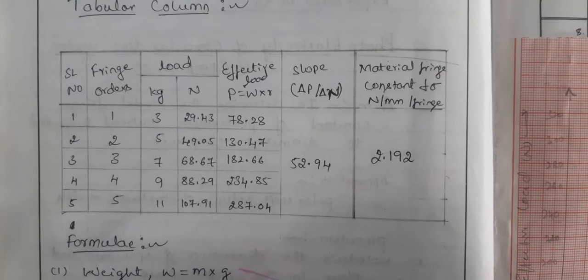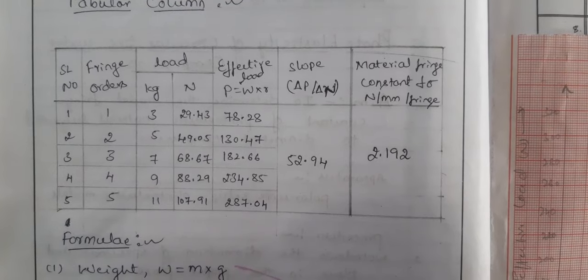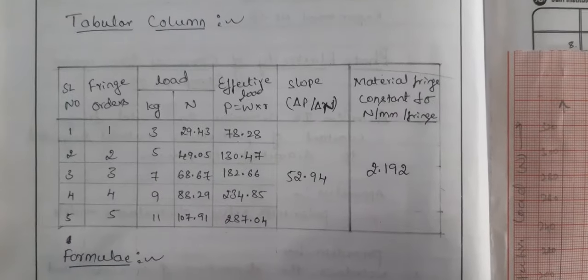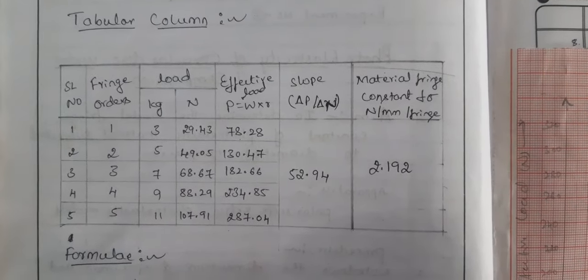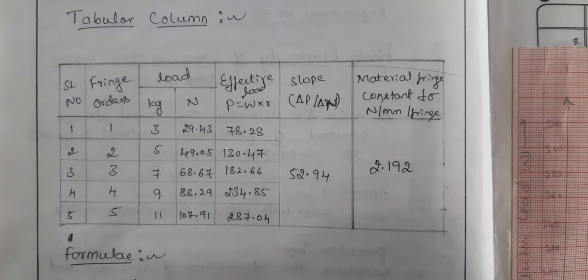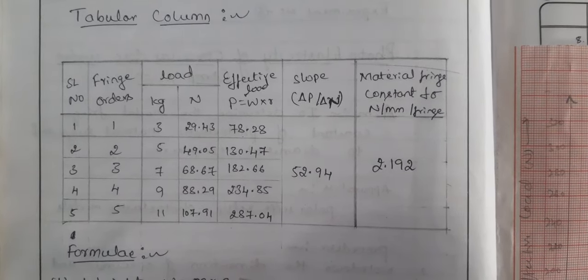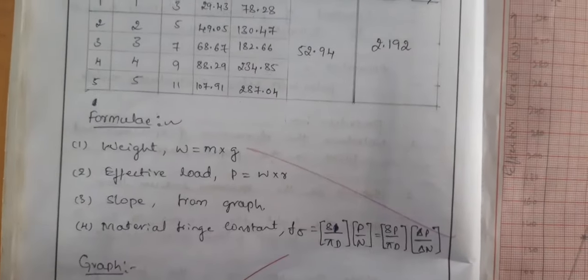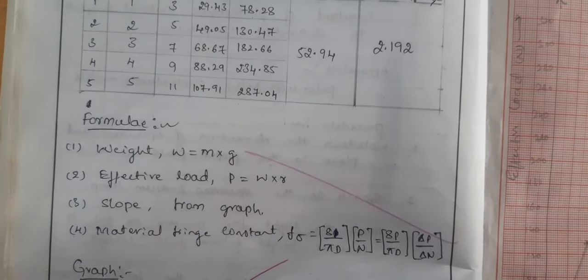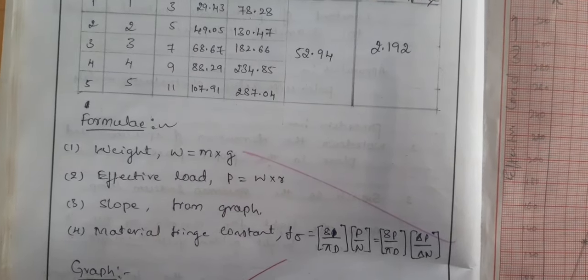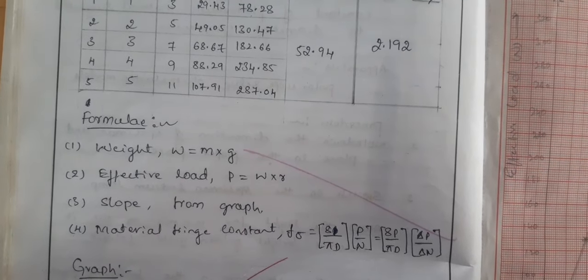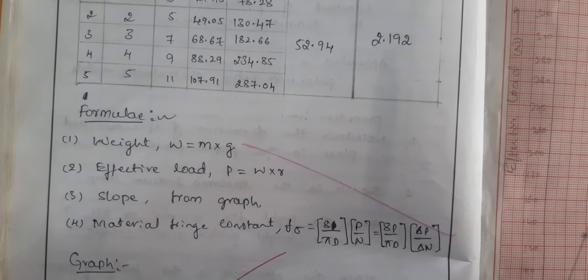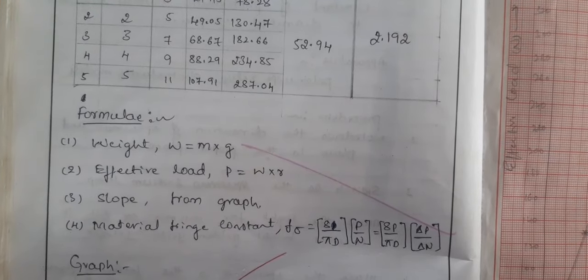The material fringe constant f sigma is in units of newton per mm per fringe. The last column — material fringe constant f sigma — tells you how much stress distribution is shown across the photoelastic material. The formulae used in this experiment are: weight w equals m times g; effective load p equals w times r; and the slope delta p by delta n is obtained from the graph.